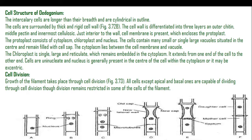Regarding cell structure: the most important structure is the rectangular middle cell, also called the intercalary cell, which is longer than its breadth and cylindrical in outline. These cells are surrounded by a thick and rigid cell wall differentiated into three layers: the outer layer is chitin, the middle layer is pectin, and the innermost layer is cellulose.